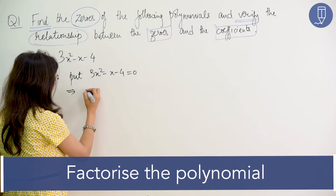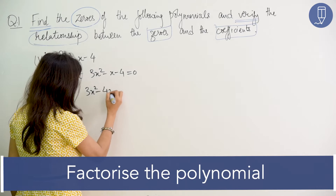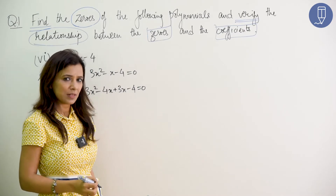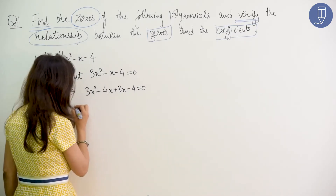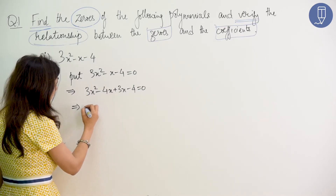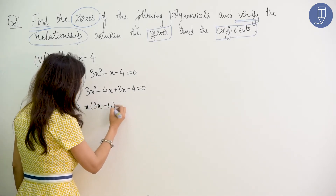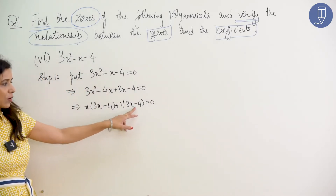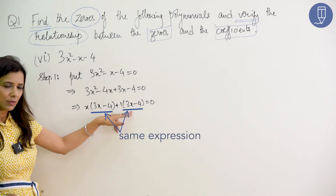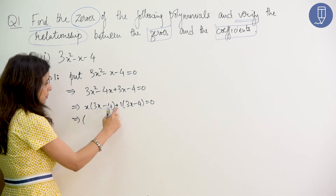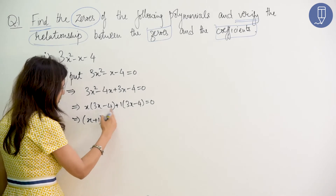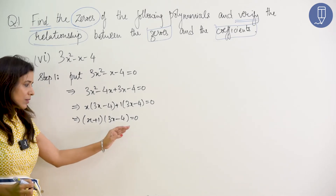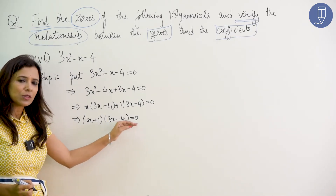Now we do factorization. Factorization is splitting the middle term. So, 3x squared minus 4x plus 3x minus 4. We take common in the first two terms: x is common, giving x(3x minus 4). In the last two terms, 1 is common, giving 1(3x minus 4). So we get x plus 1 multiplied by 3x minus 4 equal to 0.